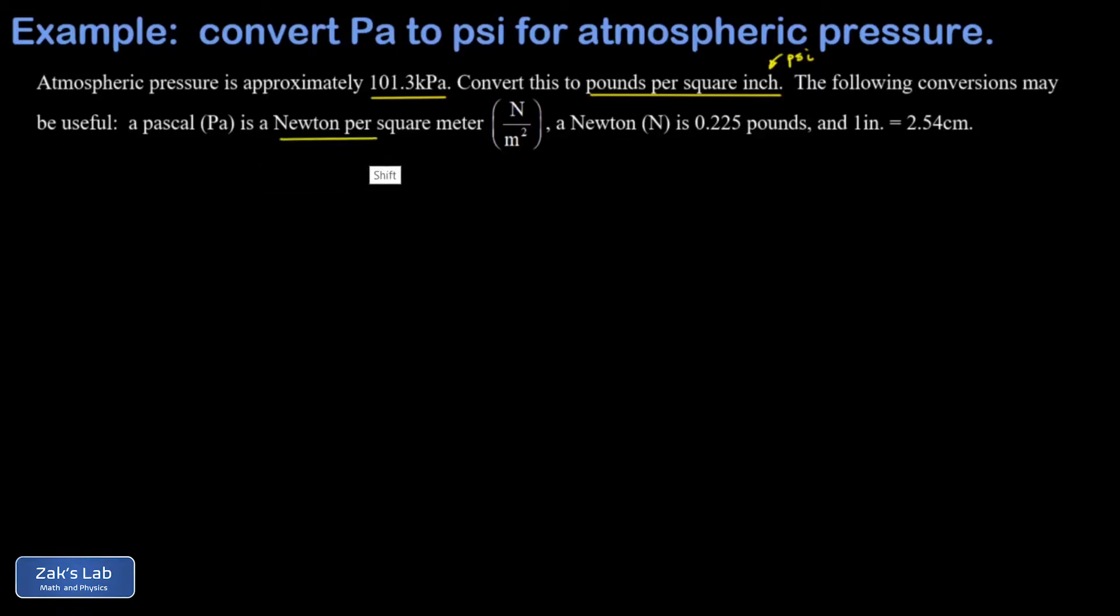First, you need to know that a pascal is actually a newton per square meter. Then we have a conversion between newtons and pounds, and a conversion between inches and centimeters. The first thing I'm going to write down is that 101.3 kilopascals is the same as 101,300 pascals.